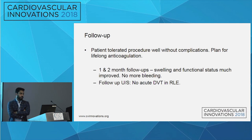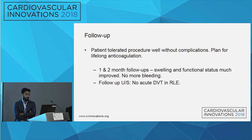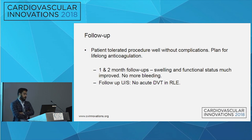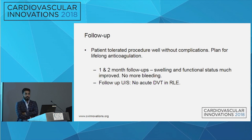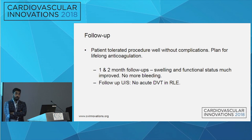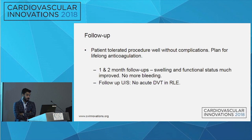The patient tolerated the procedure well with no immediate post-procedural complications. Our plan was to discharge him on lifelong anticoagulation, as we knew he would still be prone to thrombosis. He was started on Coumadin instead of rivaroxaban, since it's easier to reverse if needed. At one- and two-month follow-ups, he's been doing well — swelling has gone down, functional status has improved, no more episodes of bleeding, and a follow-up ultrasound did not show any acute DVT in the right lower extremity.